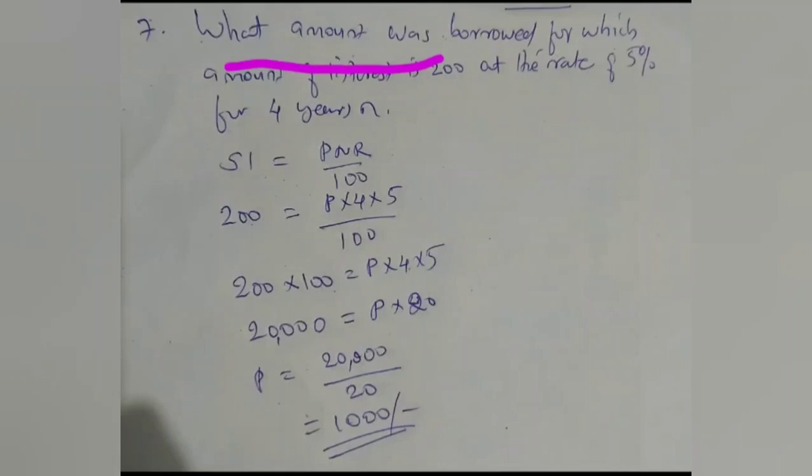So the principal amount needs to be calculated here. The known values can be given in the formula. Simple interest is equal to PNR by 100. Simple interest is 200, it is given in the question. P is an unknown value, so P into 4 into 5 divided by 100.